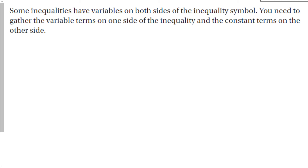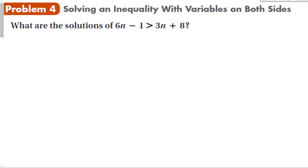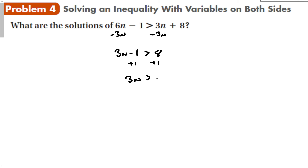Some inequalities have variables on both sides of the inequality symbol. You need to gather the variable terms on one side and the constant terms on the other. It's usually easier — especially with inequalities where we worry about negative coefficients — to bring the smaller coefficient to the larger. Solving by gathering the n's on the left gives 3n minus 1 is greater than 8. Add 1 to get 3n greater than 9, then divide by 3: n is greater than 3.